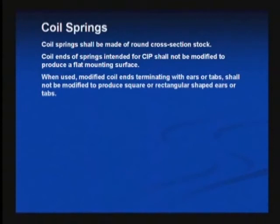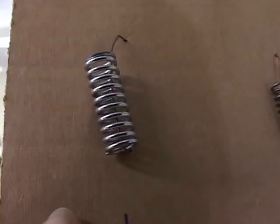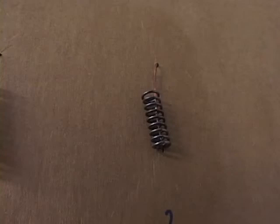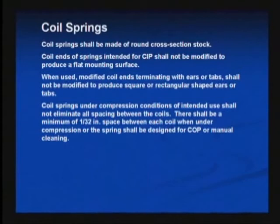Generally, coil springs should be made of round cross section. We don't want square springs or wave spring types. The coil ends of springs that are intended for CIP shall not be modified to produce a flat sealing surface. You can see on samples one and two that the bottoms of the springs have been ground flat so they don't cock the spring when under compression, but when they're flattened down, that whole flat area becomes a crevice. When coil springs are modified to have ears, as found in rotary seals, they should continue to be round stock and not be hammered into square or oblong shapes. When under compression, they shouldn't be squeezed to the point where there's no space between the coils.